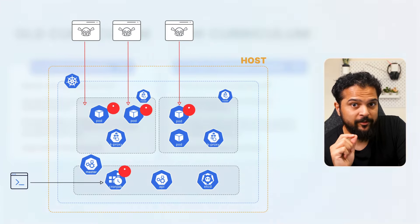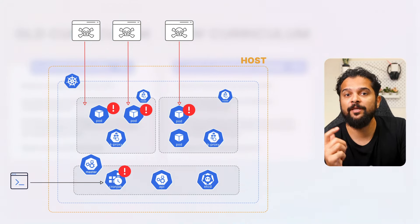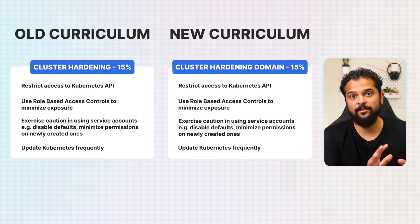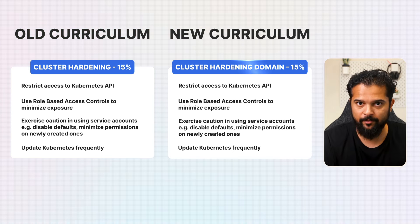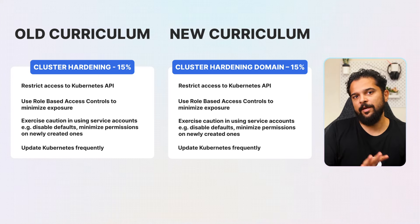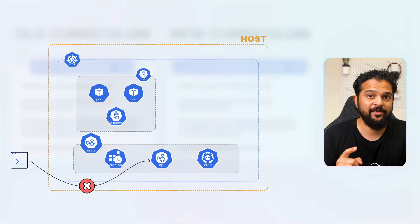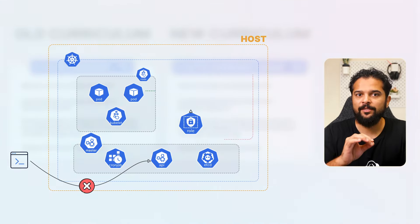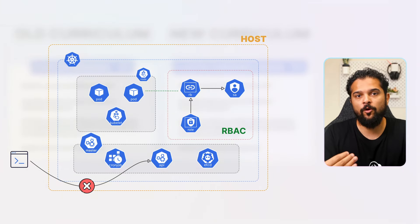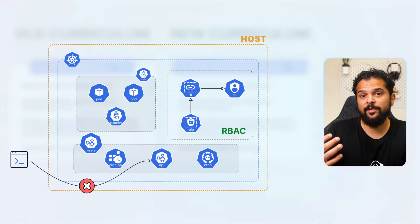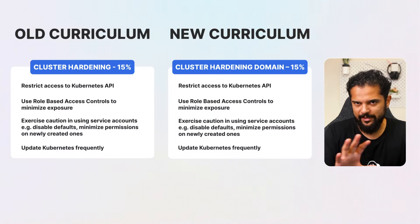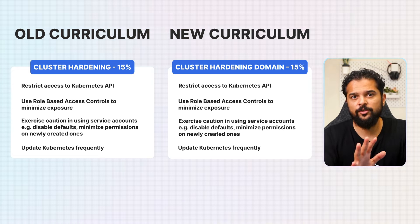The next domain is cluster hardening, which focuses on implementing strong security measures to protect Kubernetes clusters from potential threats. This domain remains critical with its weight unchanged at 15 percent. There are no major changes here. This domain includes four main practices: restricting access to the Kubernetes API, using role-based access control (RBAC) to minimize exposure, exercising caution when using service accounts, and frequently updating Kubernetes to avoid vulnerabilities.